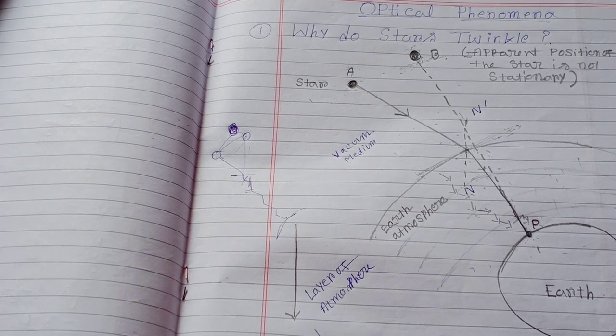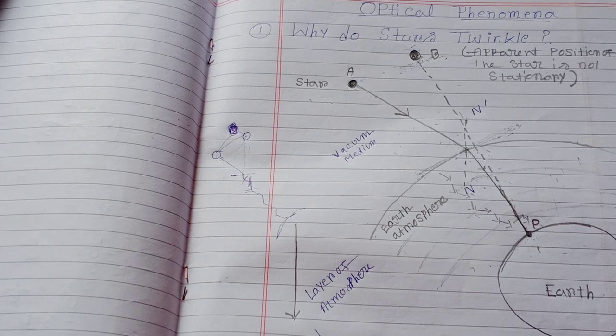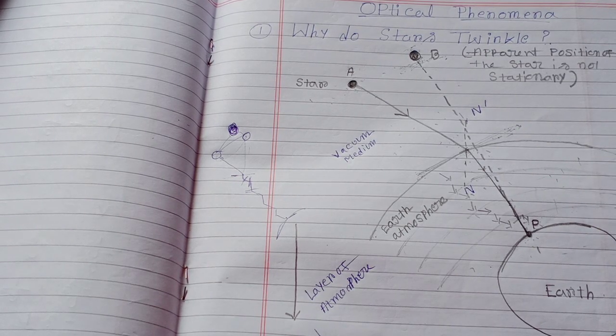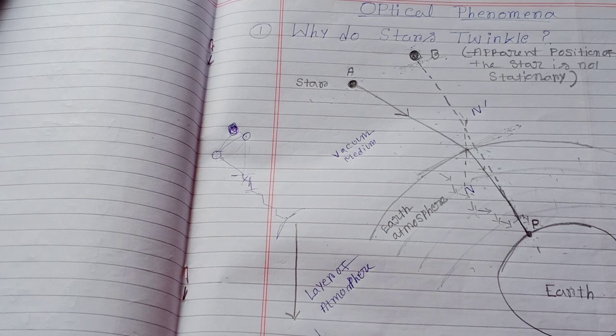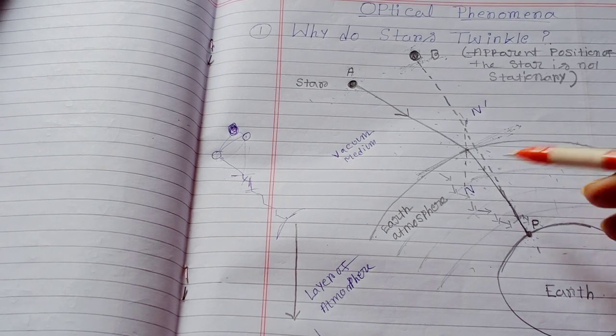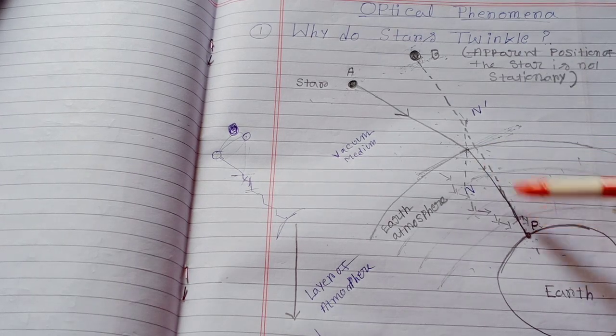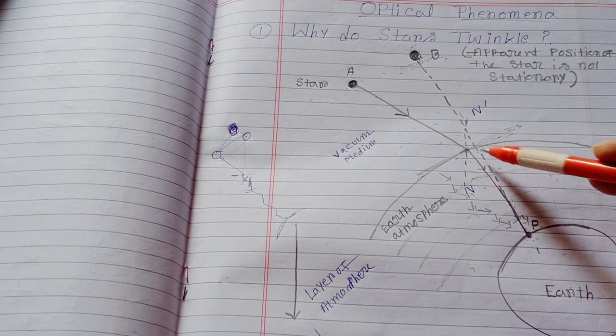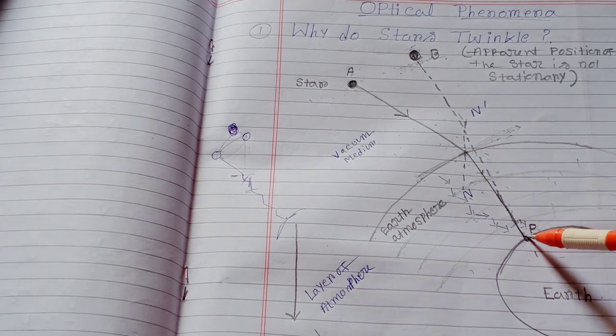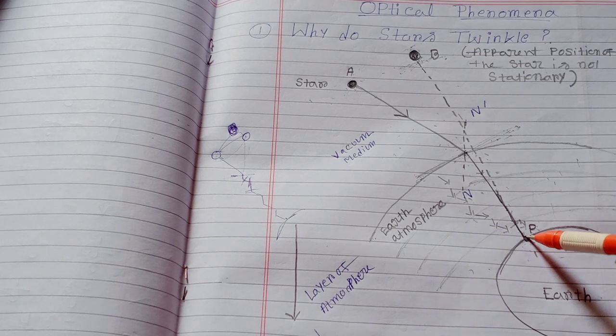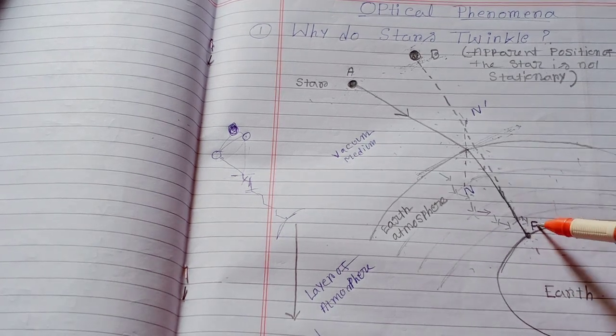As a result, when the refracted ray travels through the denser medium, sometimes it bends towards the normal and sometimes it moves away from the normal. As a result, this refracted ray will give a zigzag pattern in the denser medium and it reaches to the eyes of the observer.